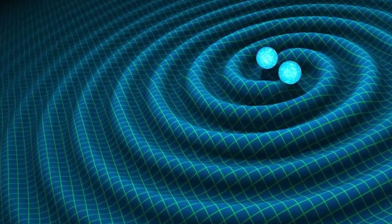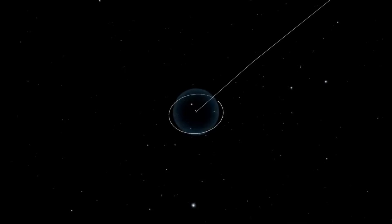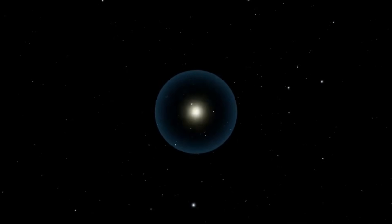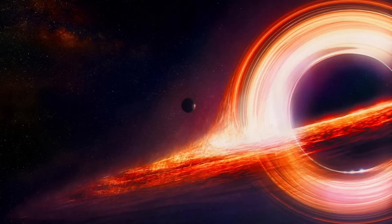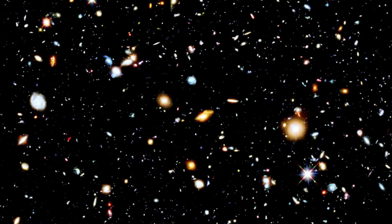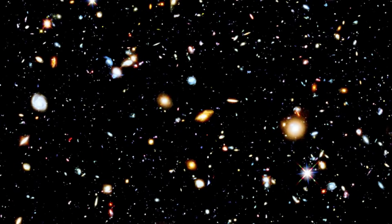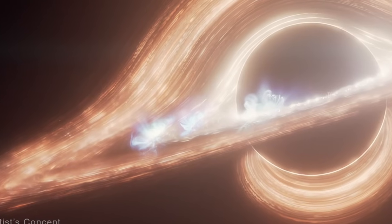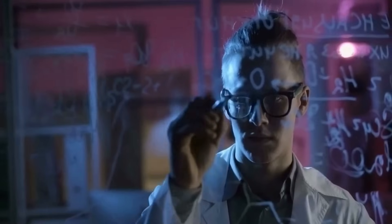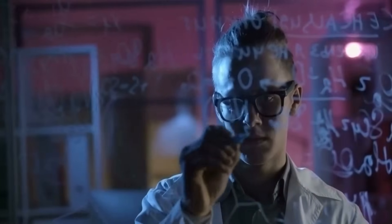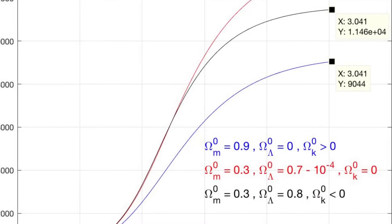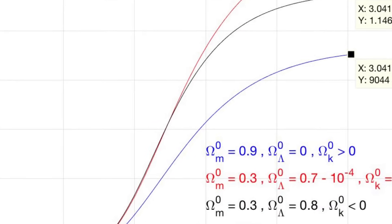This is where things get really strange. The boundary of our visible universe, the furthest distance light could have traveled to reach us since the Big Bang, acts a lot like an event horizon. It's the edge of the knowable. Beyond it, information is forever out of reach. The math that describes a black hole's event horizon - you can plug in the mass of the universe, and you get a boundary that's eerily close to the cosmic horizon astronomers measure today. It's not a perfect match, but it's close enough to make physicists raise their eyebrows.